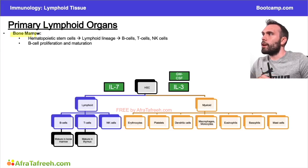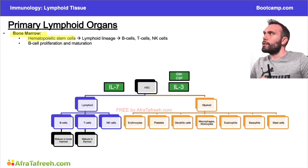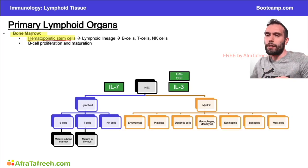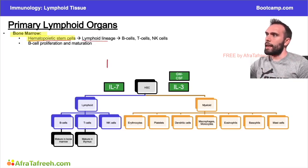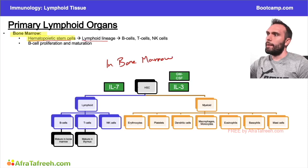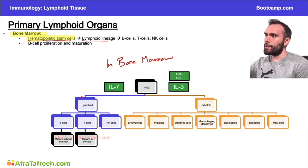Starting with the primary lymphoid organs — primarily the bone marrow and the thymus. The big thing to remember about the bone marrow is that this is where these cells are going to form. That's where we're going to turn hematopoietic stem cells into cells of the lymphoid lineage. This process is happening in the bone marrow, starting off with a hematopoietic stem cell.